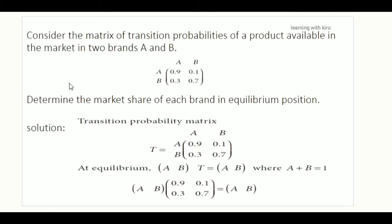First problem — let's set up the matrix. Next, let's create the matrix. In this problem, let's give two brands, A and B. What we have to find here is each brand's market share, which is equal to the equilibrium position. What we have to denote are the transition probability matrices.